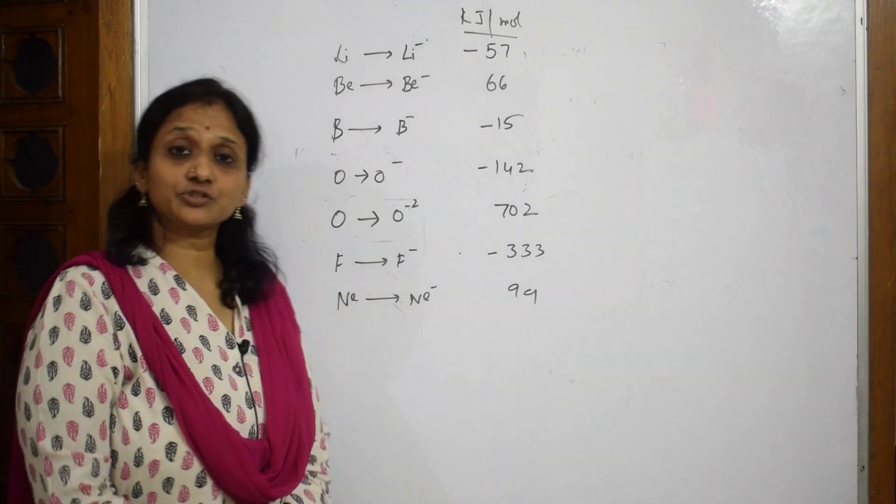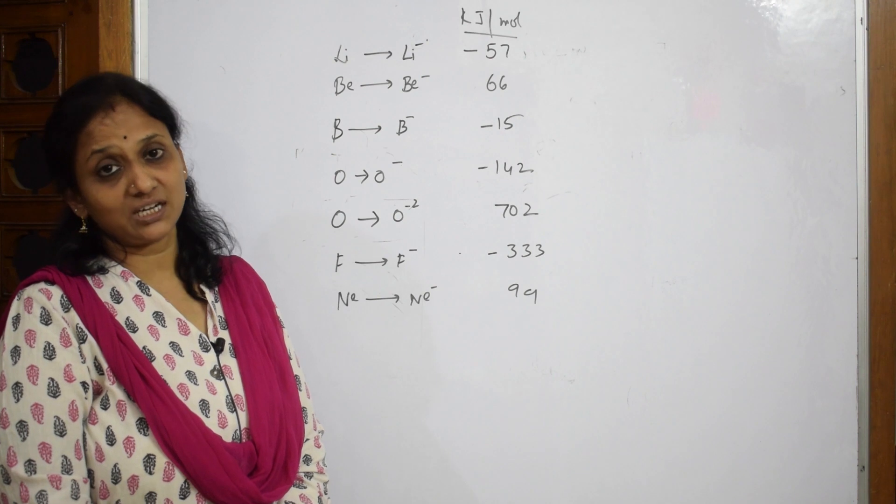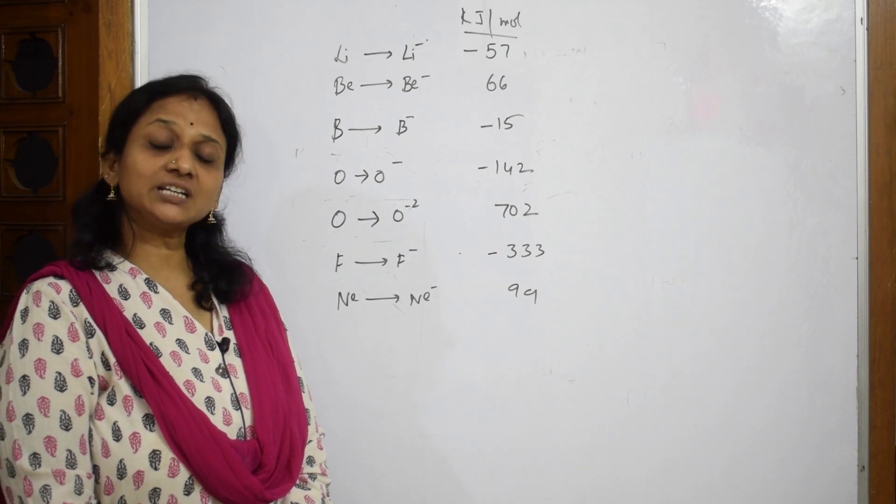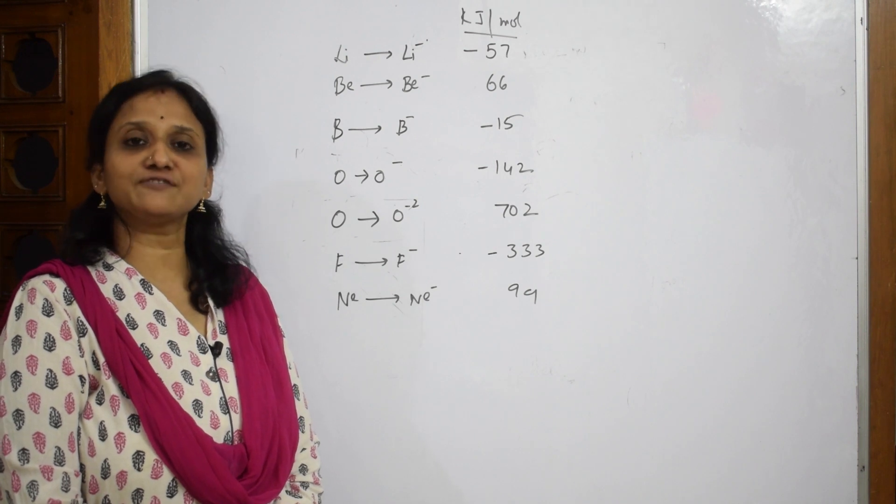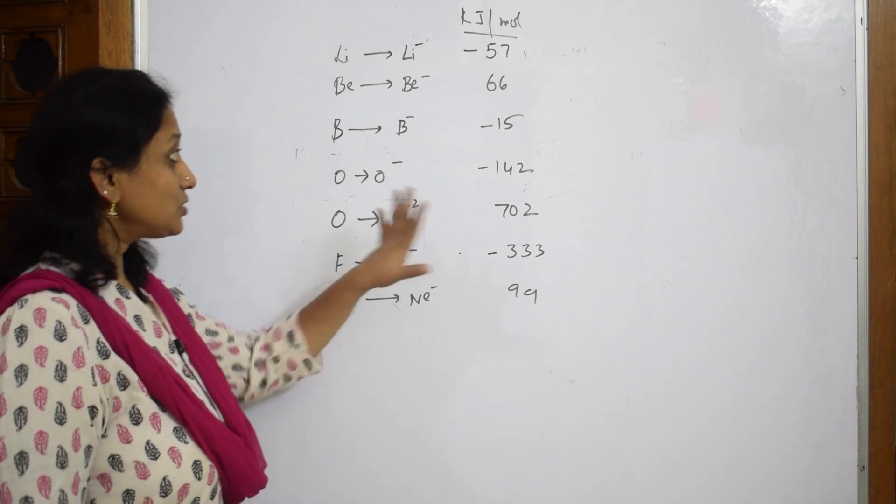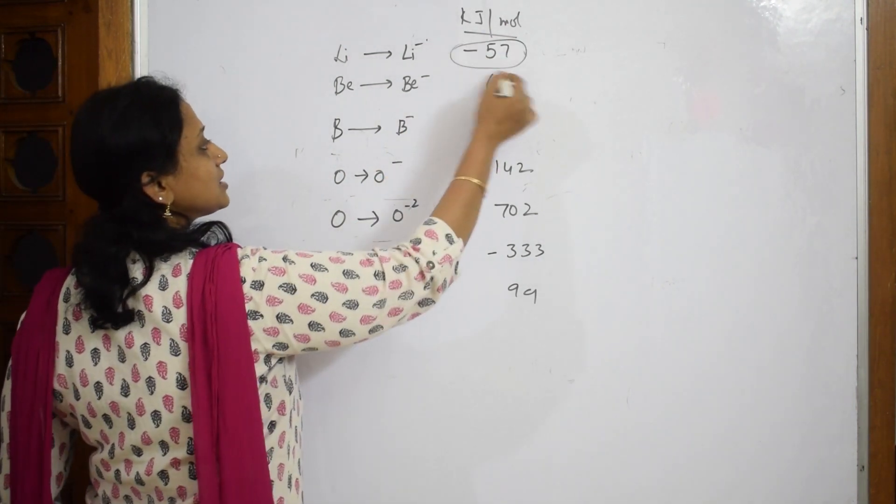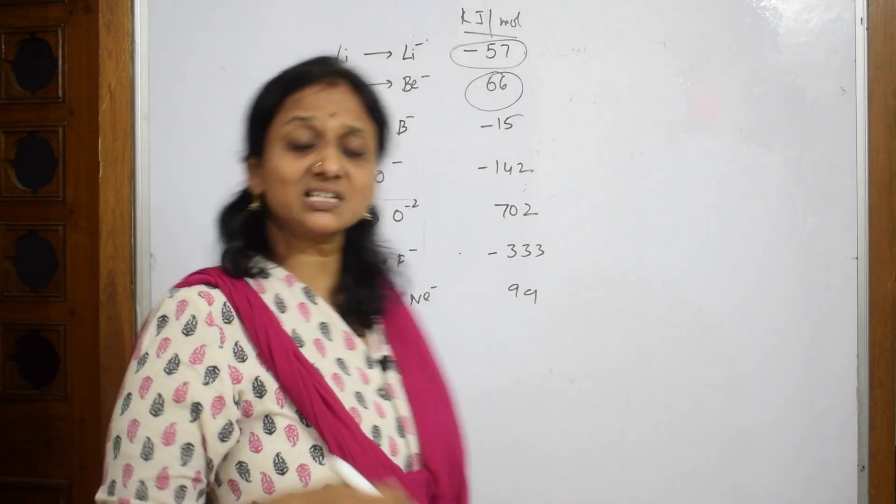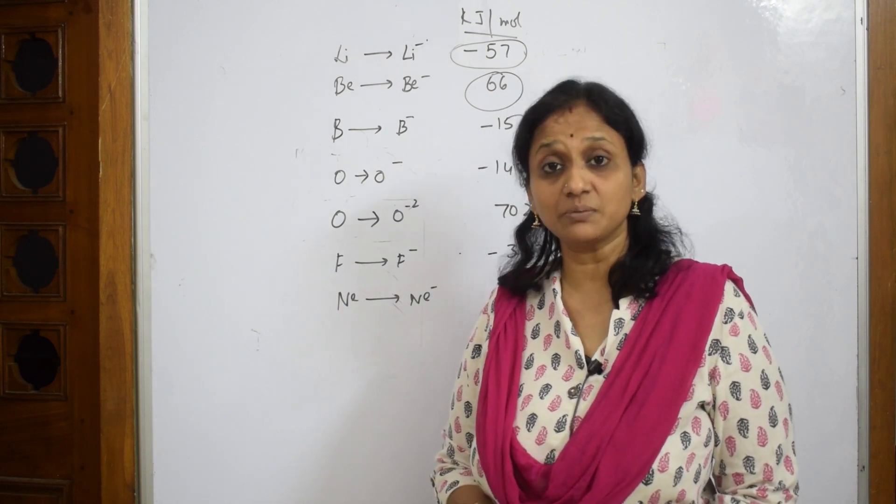These are some of the electron affinity values. We said electron affinity or electron gain enthalpy, both are the same. In electron gain enthalpy, we have two different types: positive electron gain enthalpy and negative electron gain enthalpy. Here when I see the values, there are some negative values and some positive values. Basically, where do we get electron affinity values? We can get them indirectly from Born-Haber cycle. I already did a video on Born-Haber cycle, just watch the video please.